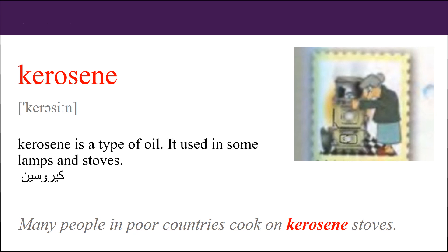Kerosene. Kerosene is a type of oil. It is used in some lamps and stoves. Many people in poor countries cook on kerosene stoves.